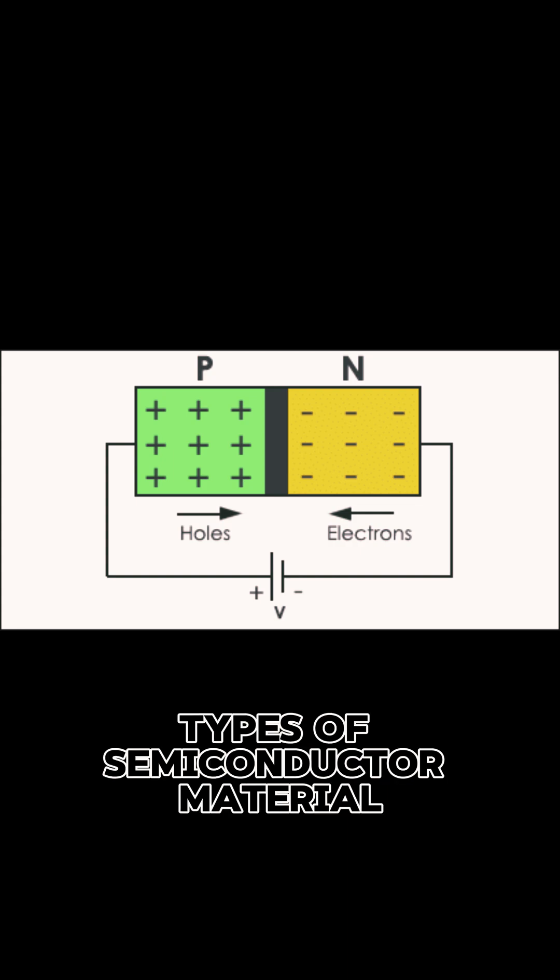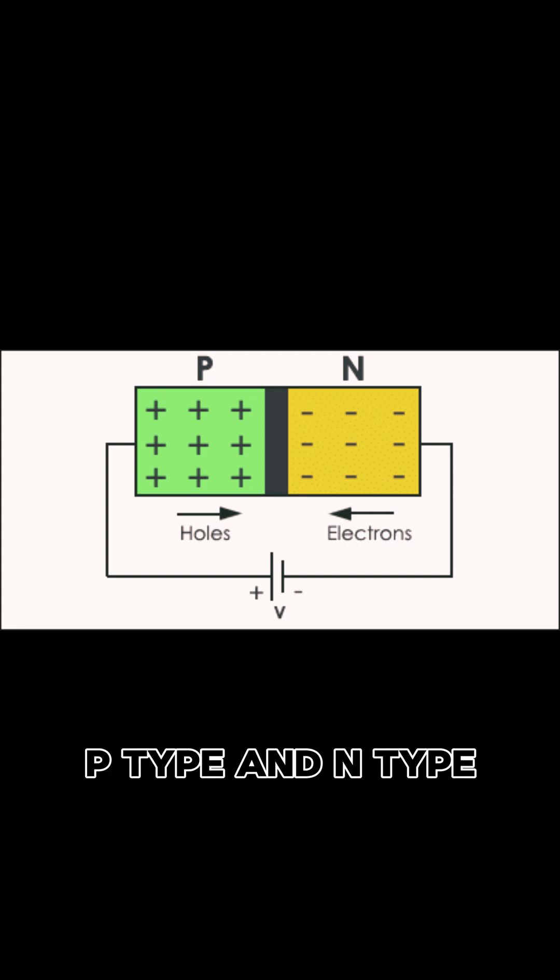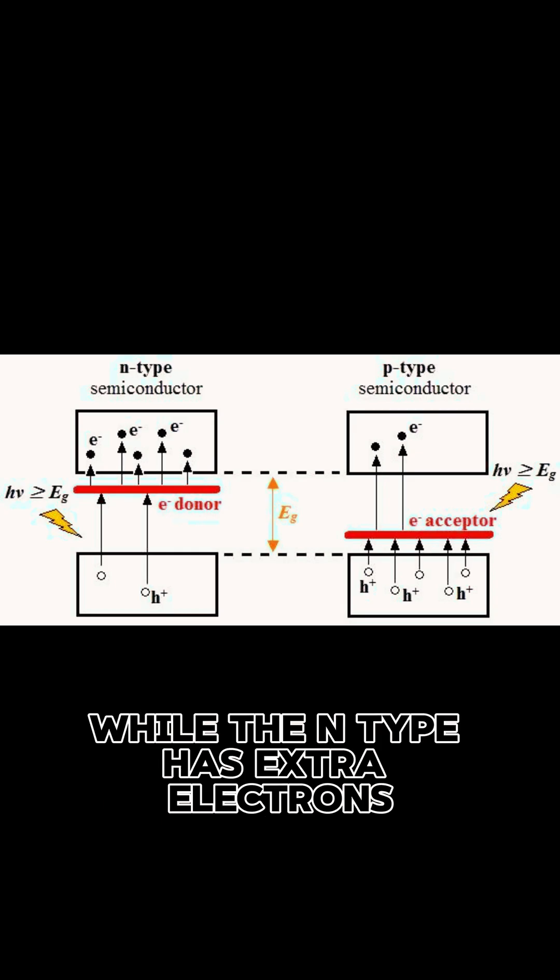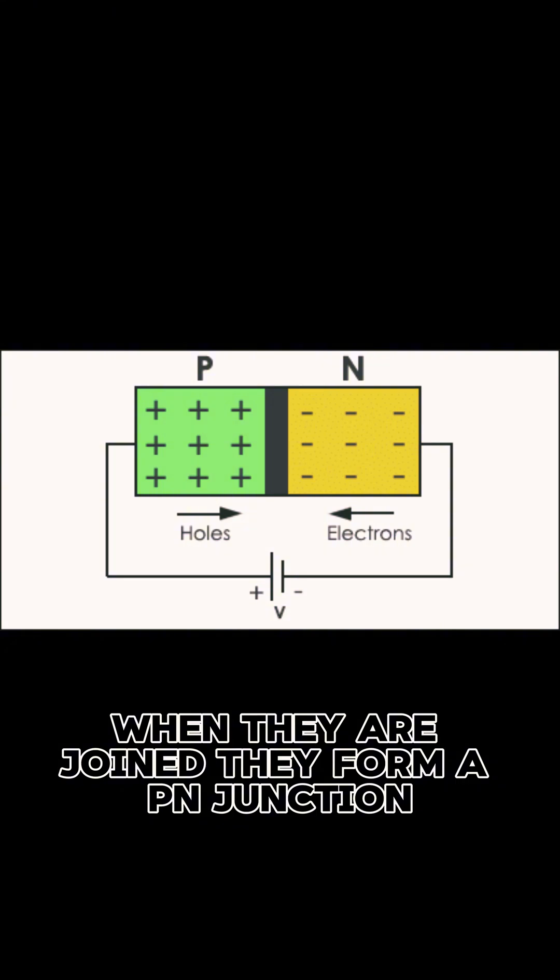A diode is made of two types of semiconductor material, P-type and N-type. The P-type has an excess of holes while the N-type has extra electrons. When they are joined, they form a P-N junction, which is the heart of the diode.